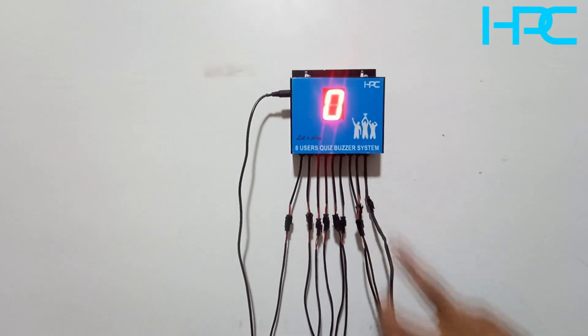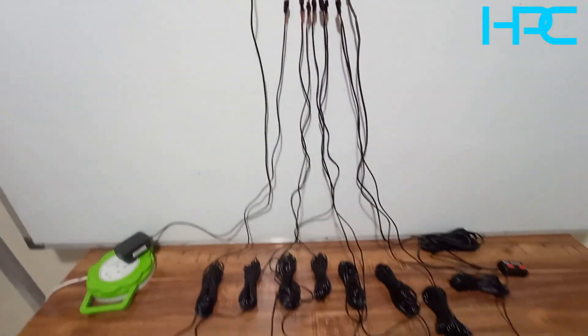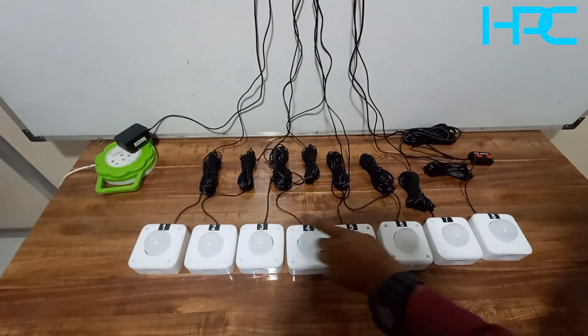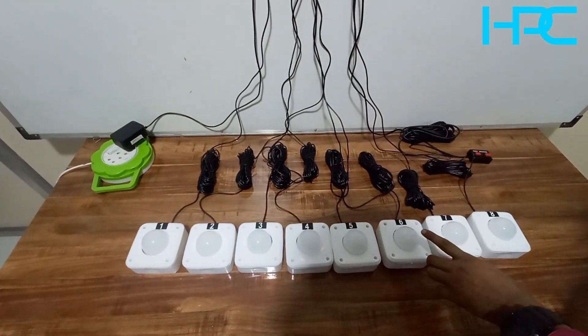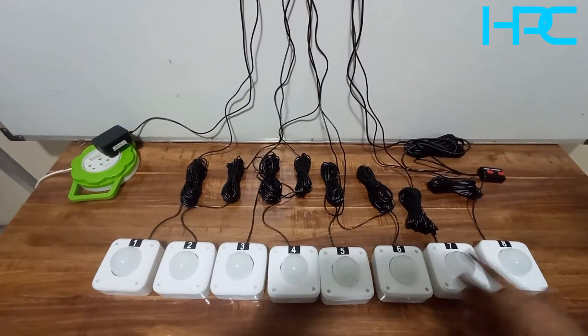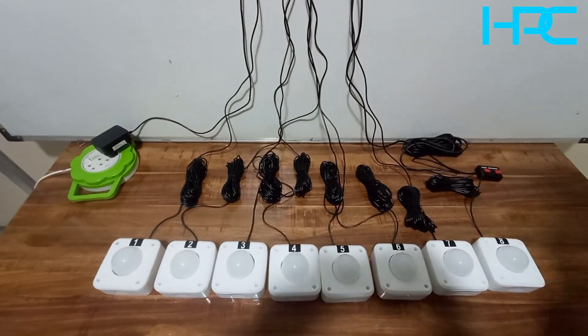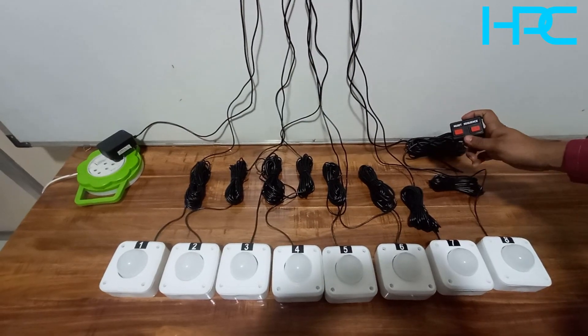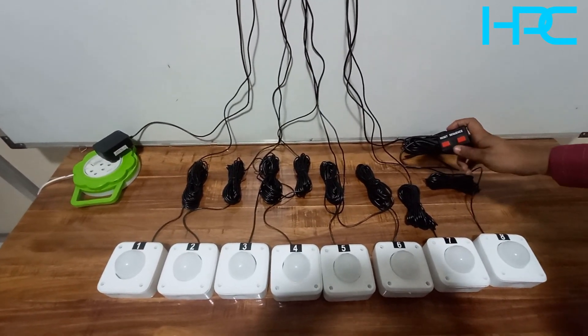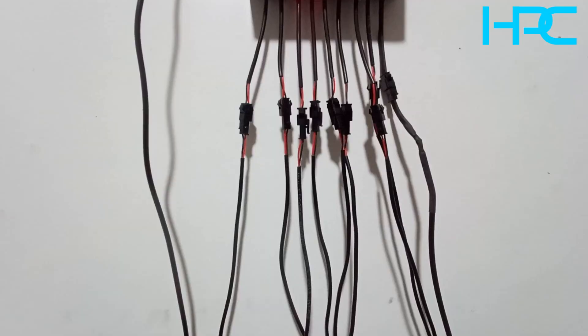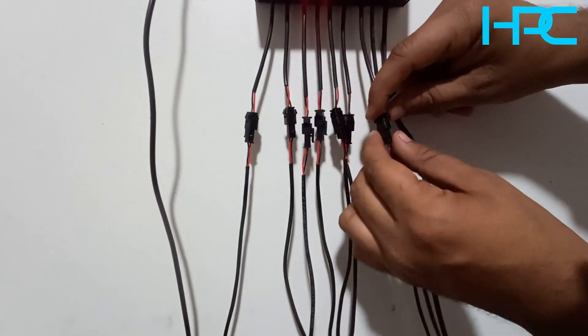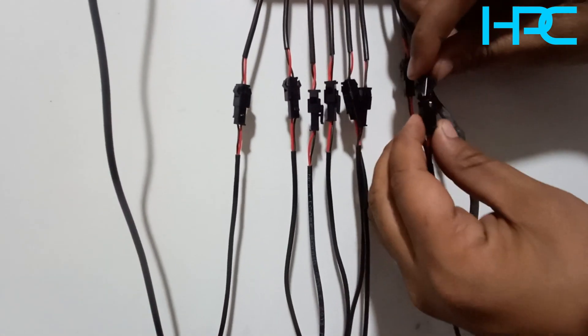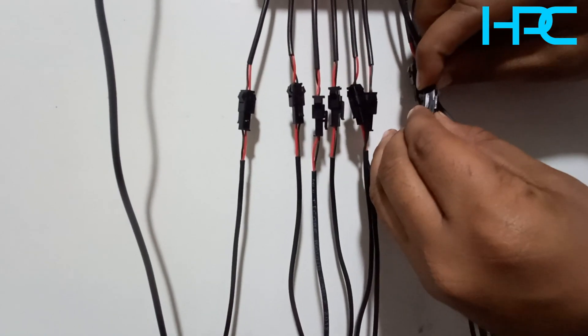The wire length between display unit and contestant remote, see this quiz remote, the distance between them is 8 meters for each and every remote. This system has a total of 9 remotes, 8 for the contestants and 1 reset sequence remote for the person who is conducting the quiz contest. The system has detachable connectors, you can remove them and attach them also, so this option is also available.